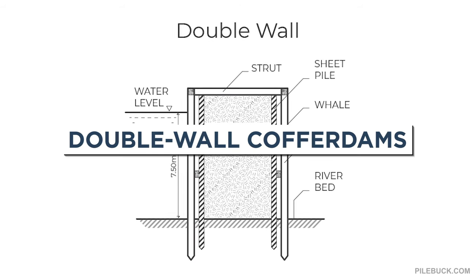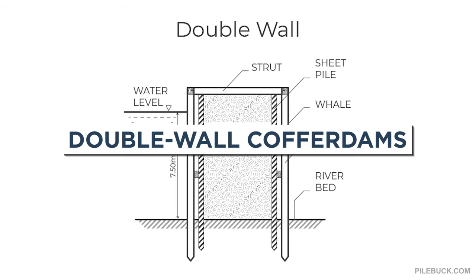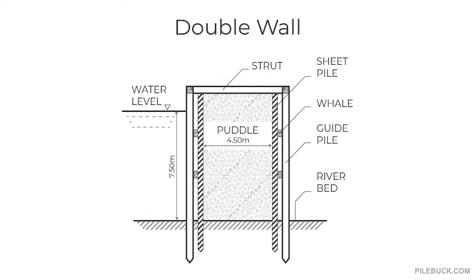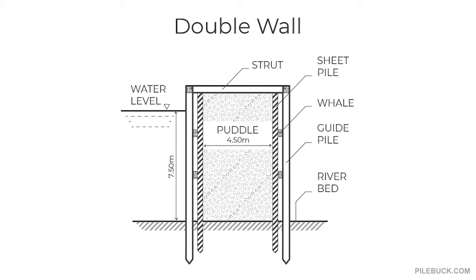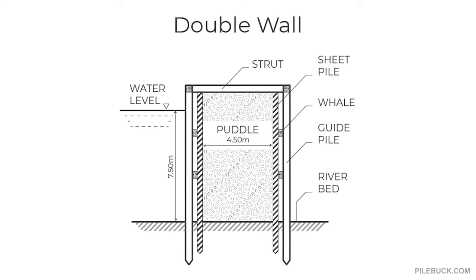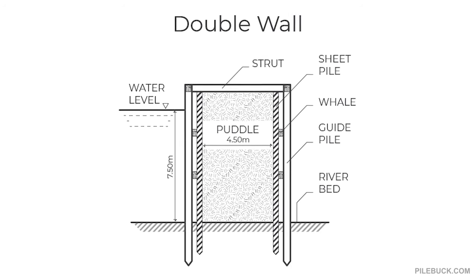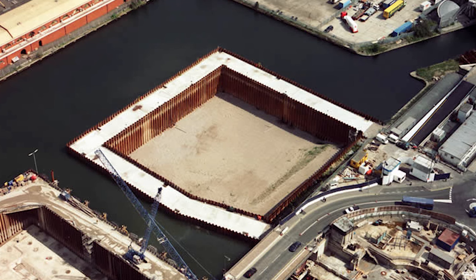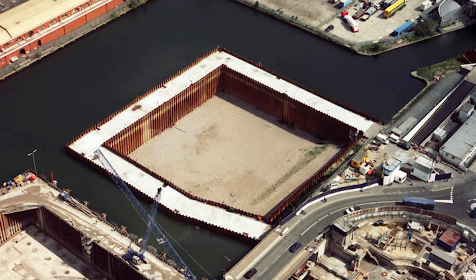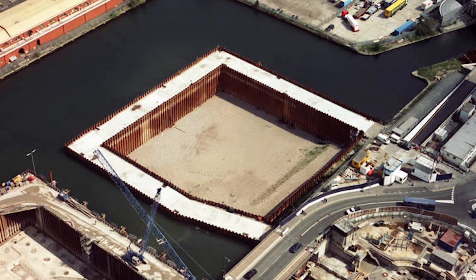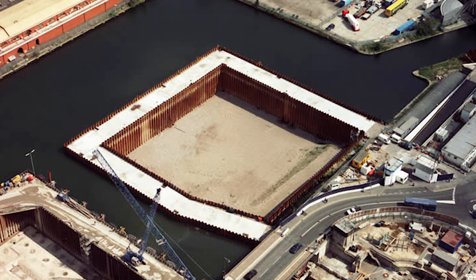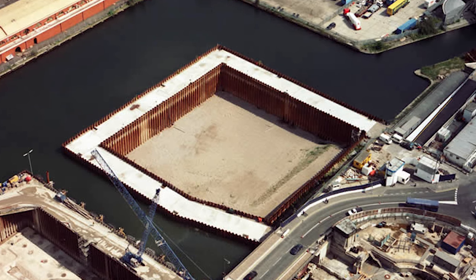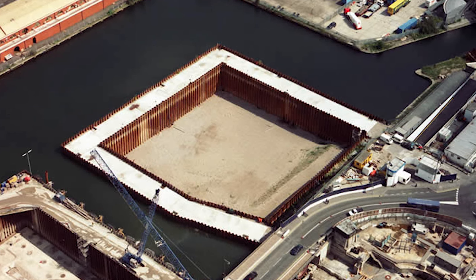Half-filled bags of sand are used to stabilize the single wall coffer dam. Double wall coffer dams consist of two straight parallel walls made of sheet piling that are tied together. The space between the two walls is then filled with soil. Double wall coffer dams are used in water with a depth up to 12 meters.